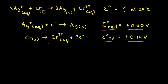Our next step is to make the number of electrons equal for our two half reactions and add them together. For the oxidation half reaction we lose three electrons, but for the reduction half reaction we only gain one electron. Therefore, we need to multiply everything through in our reduction half reaction by three, giving us 3Ag⁺ plus 3 electrons goes to 3Ag.